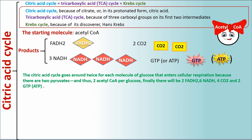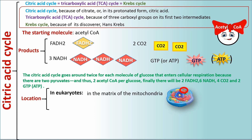In total per glucose, there will be two FADH2, six NADH, four CO2, and two GTP or ATP. Citric acid cycle occurs in eukaryotes in the matrix of mitochondria and in prokaryotes in the cytoplasm.